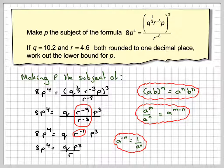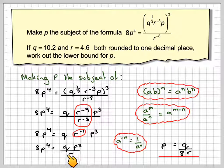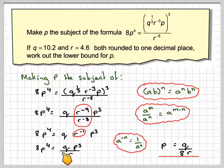If we divide by P^3 and divide by 8, we get P = Q / (8R). Dividing by 8 takes the 8 down here, dividing by P^3 comes down here, and P^4 minus P^3 gives me P. So I've made P the subject.